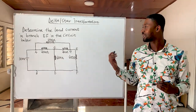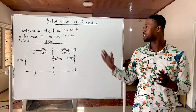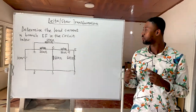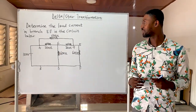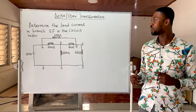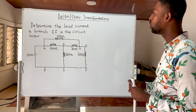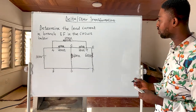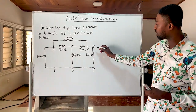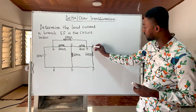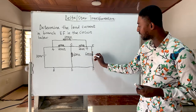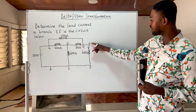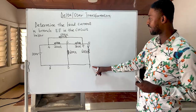We previously covered the concept of delta-star transformation, and for today's lesson we want to solve a question on delta-star transformation. In the question you are supposed to determine the load current in branch EF — that is, the current flowing through the 600 ohm resistor.